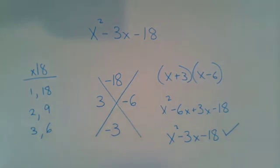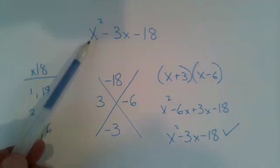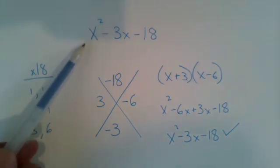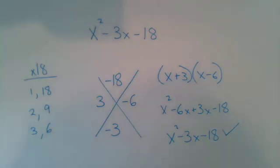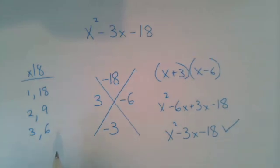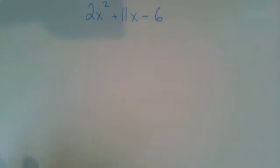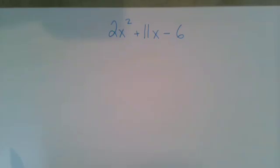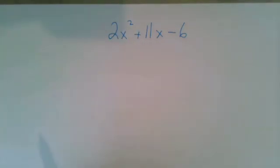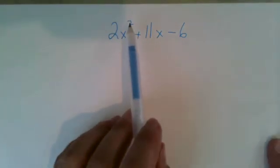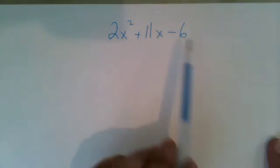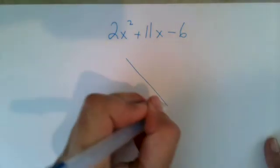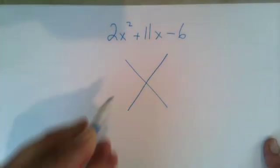Now, so far, we have been doing problems where our x squared term has a coefficient of one. But this method also works when our x squared term has a coefficient of more than one. So here's our next equation, 2x squared plus 11x minus 6. And this time we can see our x squared has a coefficient, but we can still use the x method. We just need to do some factoring by grouping at the end.